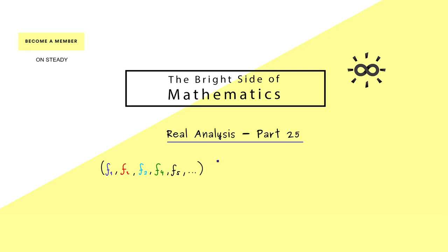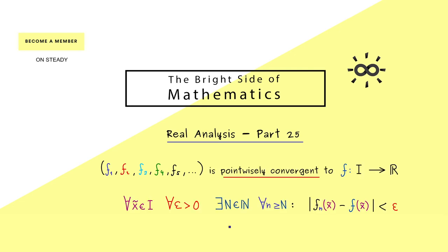In order to understand this, please first recall that we call a sequence of functions pointwise convergent to another function f if for all points x tilde we have the convergence of the values at this point. This means that in this formulation with the quantifiers, you are allowed to choose different capital N's depending on x tilde.